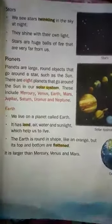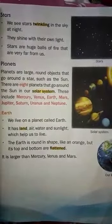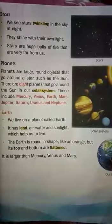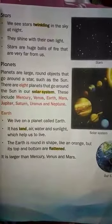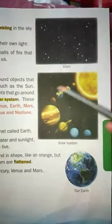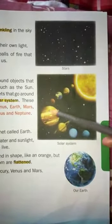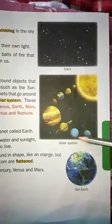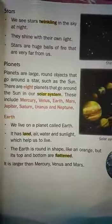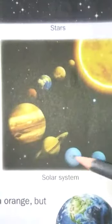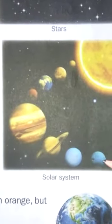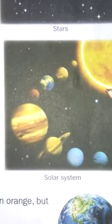Planets are large round objects that go around a star such as the sun. They revolve around the sun. Look at this picture — this is a solar system. Sun is here and all these are planets revolving around the sun. There are eight planets in our solar system, and this is called the solar system.